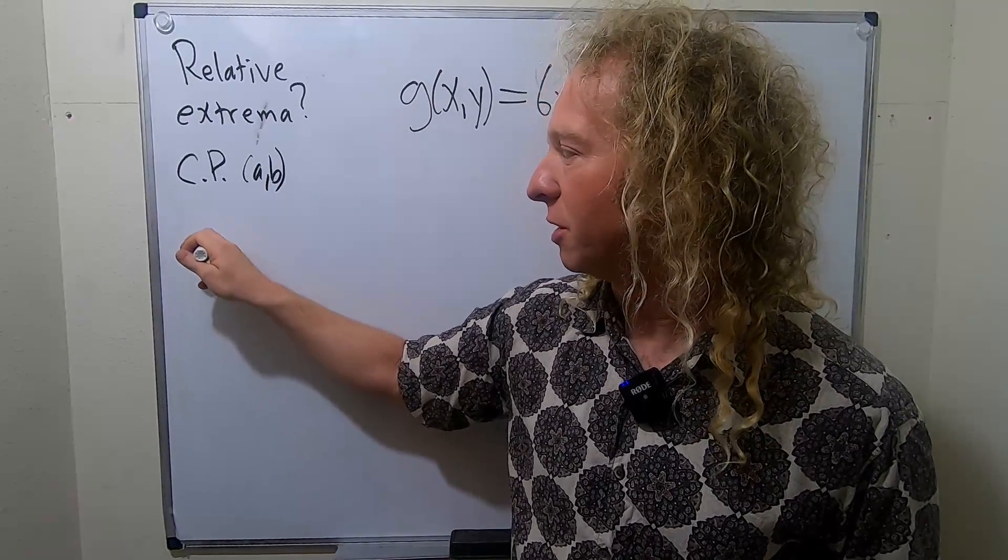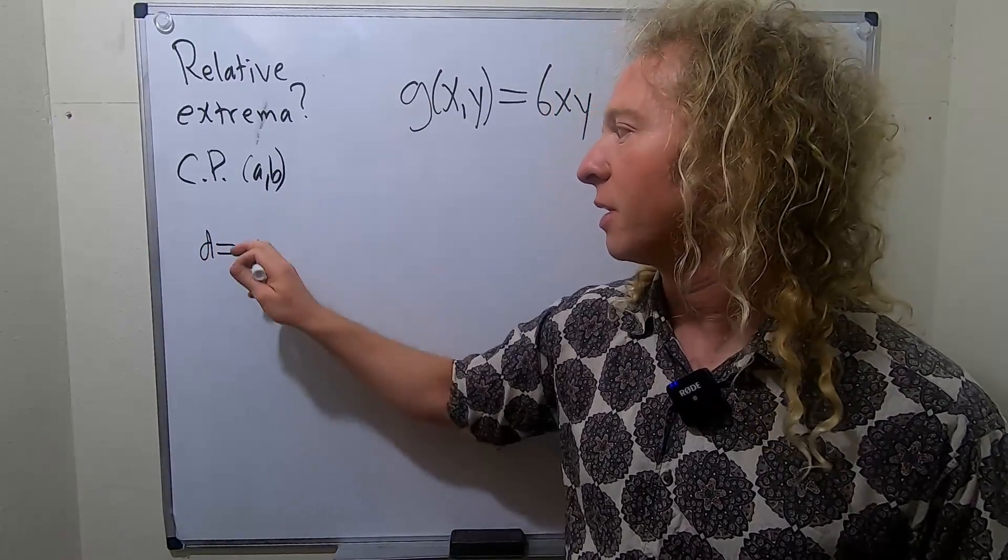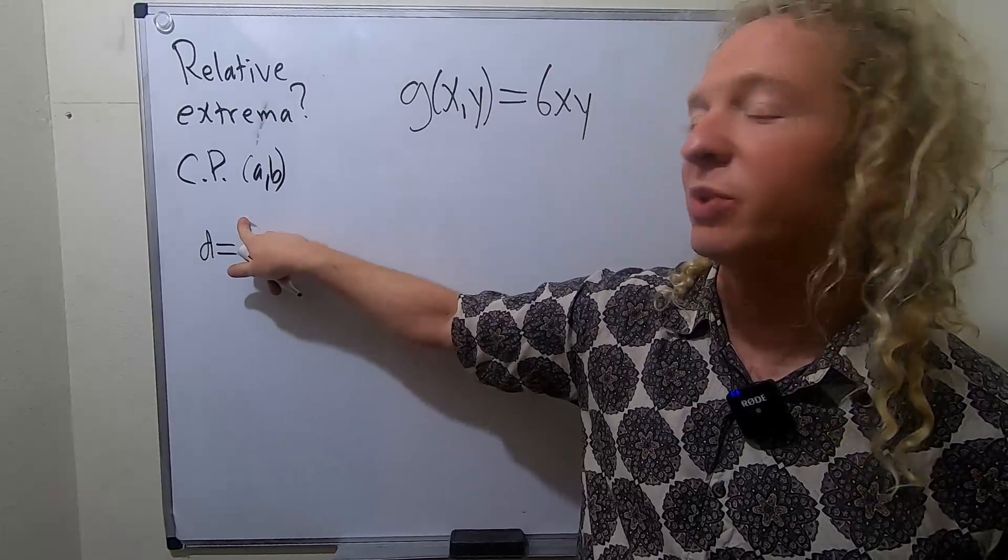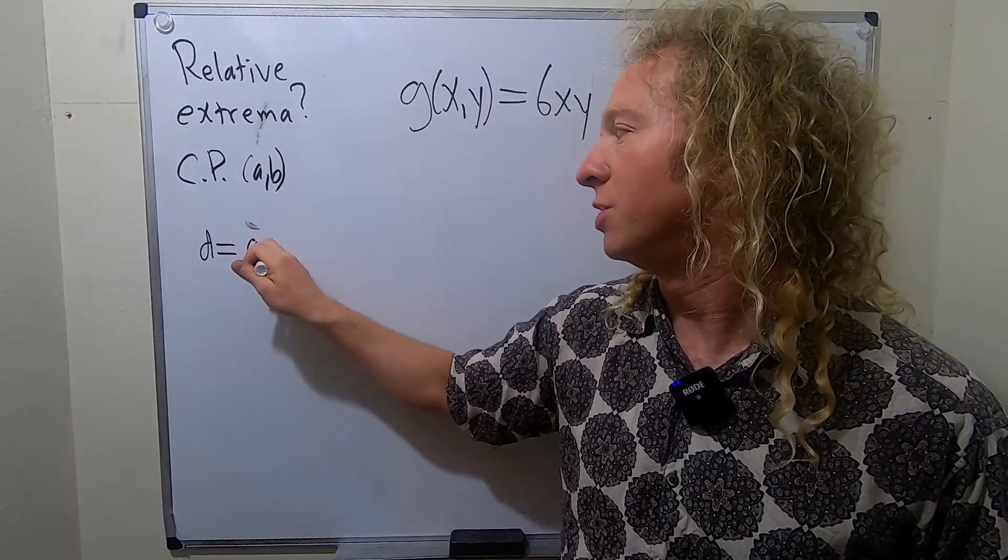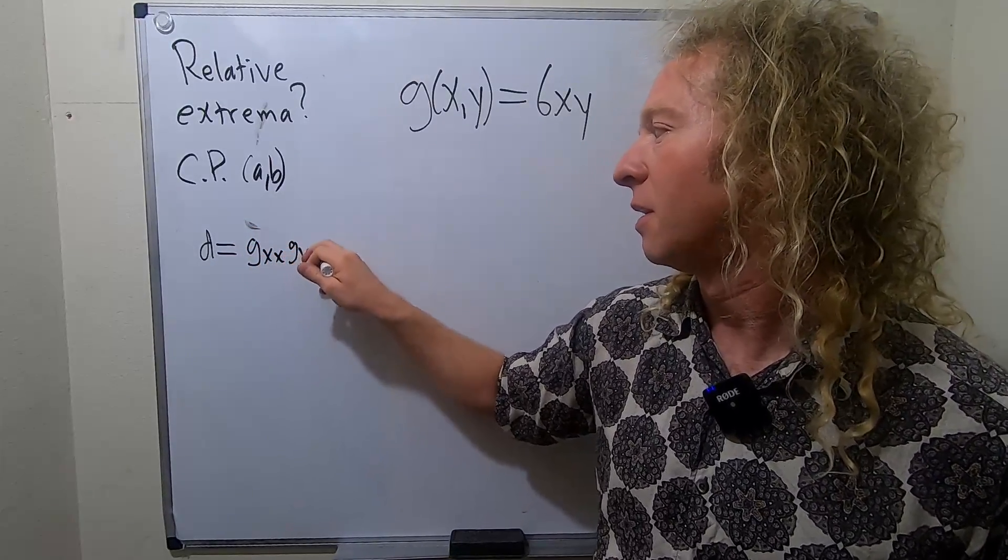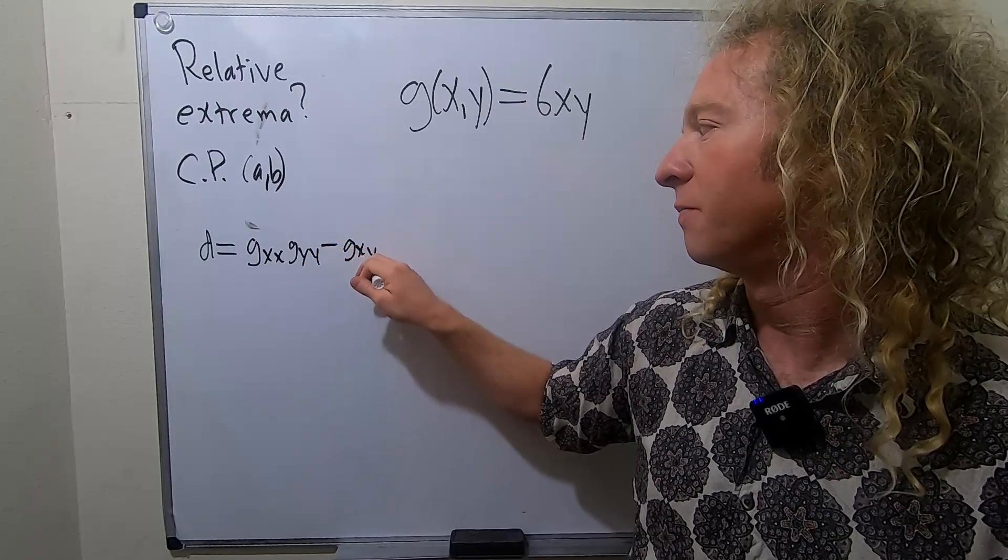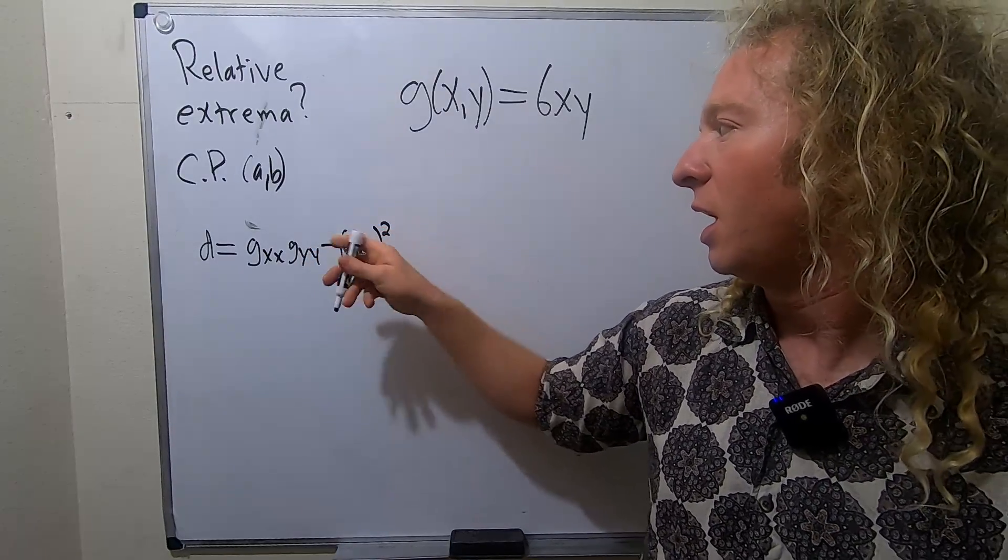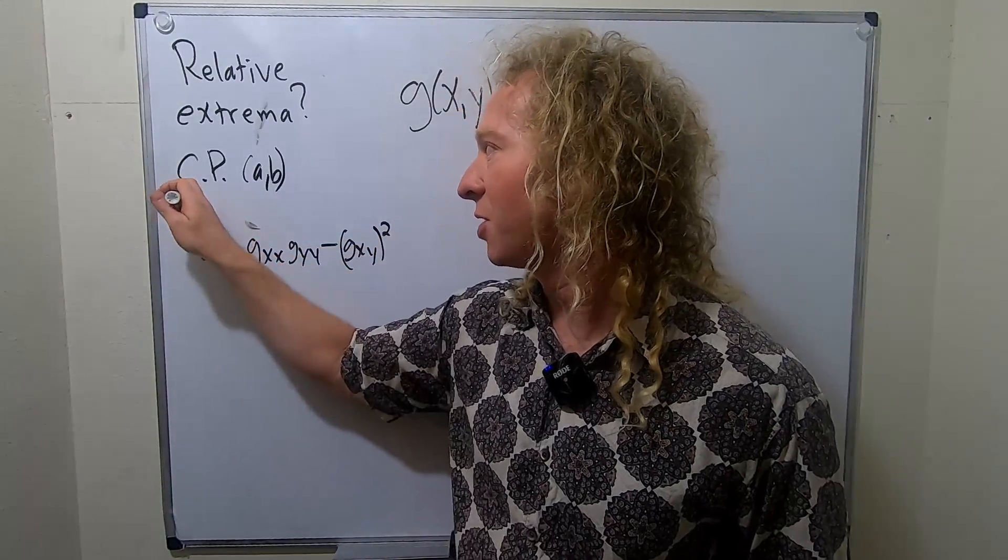And then you'll look at this expression here. So D equals, and I'll use G since we have G in this problem. So GXX, GYY minus GXY squared. So this is the mixed partial. And you evaluate this expression at your critical point.